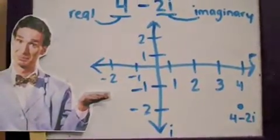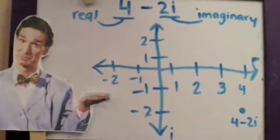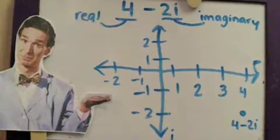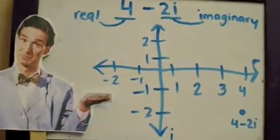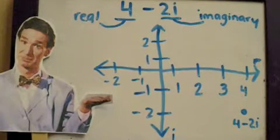Next is complex numbers. A complex number in standard form has two parts. One number is the real part, while the other number is the imaginary part. When graphing a complex number, take 4 minus 2i, for example, move right four spaces and down two spaces.